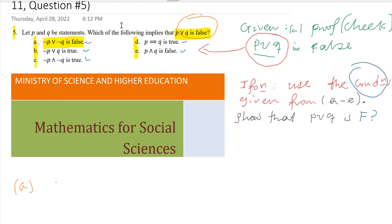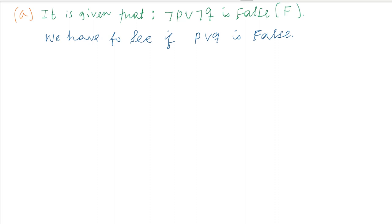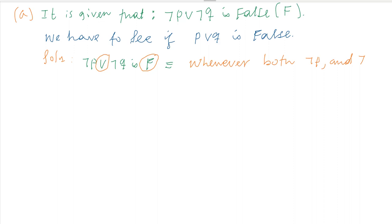For part A, we have the condition: negation of P or negation of Q is false. Does this condition allow us to conclude that P or Q is false? We start from the given information. Since we have a disjunction, a disjunction is false only whenever both negation of P and negation of Q are false.